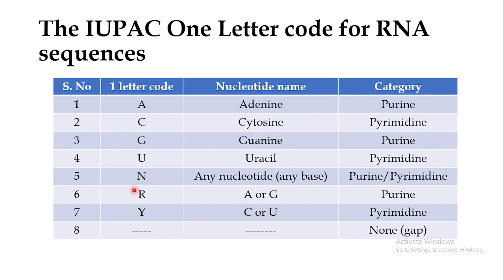When there is an R in the RNA sequence that means it is either adenine or guanine — so it represents only a purine. When there is a Y in the RNA sequence that represents a pyrimidine, which can be either cytosine or uracil. Dashes in the sequence represent a gap in the RNA sequence.